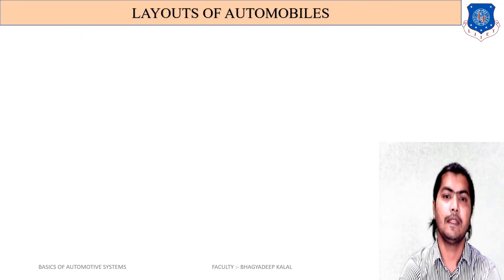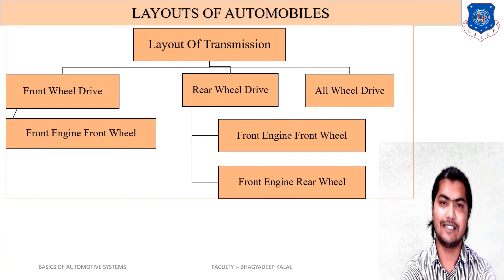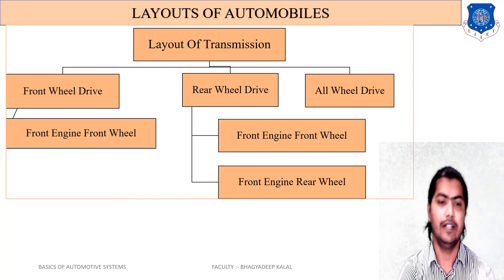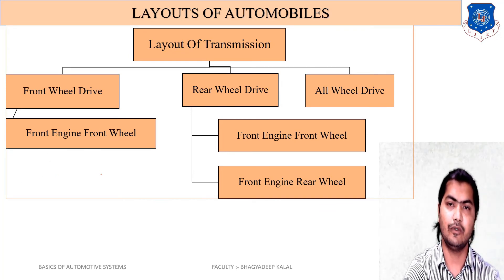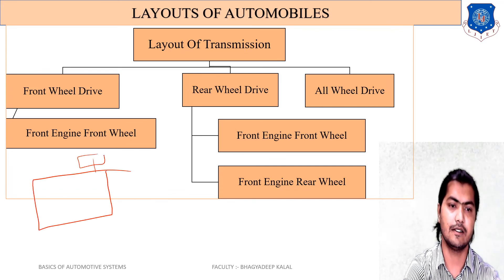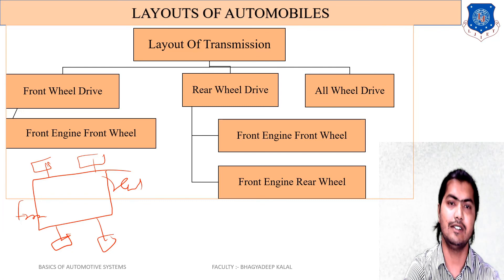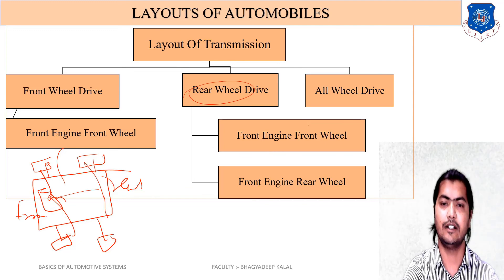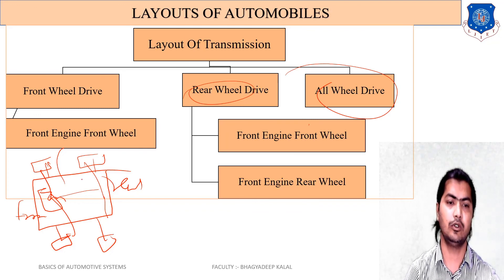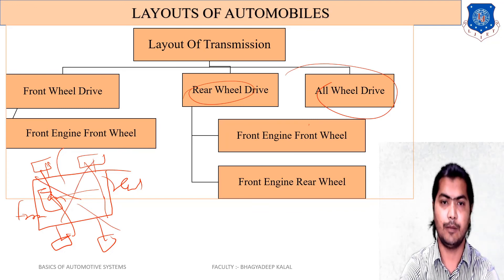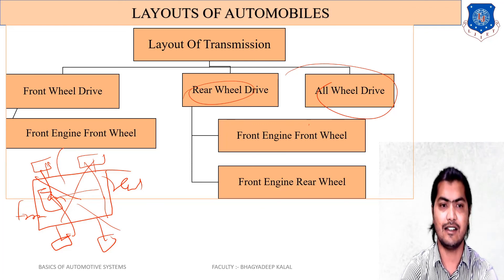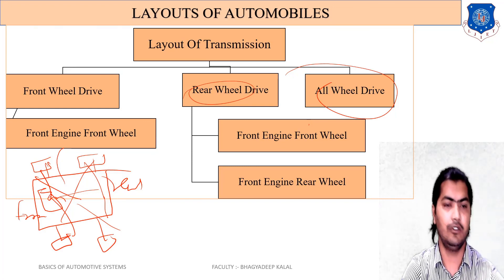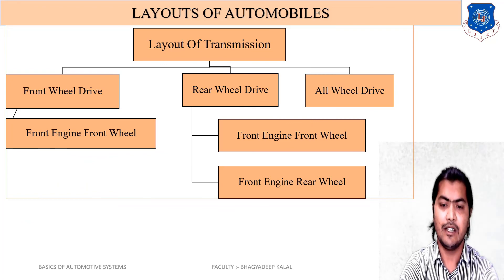The layout of the transmission system has three main types: front-wheel drive, rear-wheel drive, and all-wheel drive. In front-wheel drive, the engine is at the front and power is transmitted to the front wheels. In rear-wheel drive, the front engine transmits power to the rear wheels. In all-wheel drive, power is transmitted to all four wheels. The next lecture will discuss front-wheel drive, rear-wheel drive, and all-wheel drive in detail, which is important for your exams. Thank you.